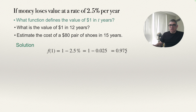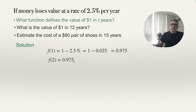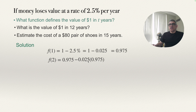So what happens in year 2? In year 2 it will be this value, $0.975, minus 2.5% of this $0.975. So f of 2 equals $0.975 minus 2.5% of $0.975 — that is, minus $0.025 of $0.975, minus 2.5% of the value of the money at that moment. I can see that $0.975 is a common factor.